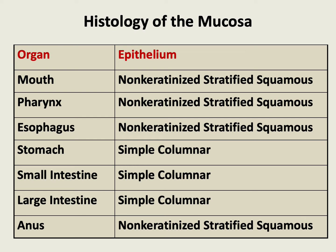The epithelium of the mouth, pharynx, esophagus, and the anal canal is non-keratinized stratified squamous epithelium. Whereas in the stomach, small intestine, and large intestine, we see simple columnar epithelium.